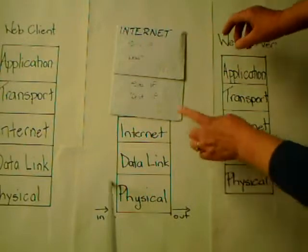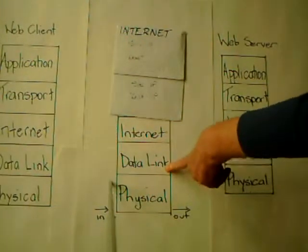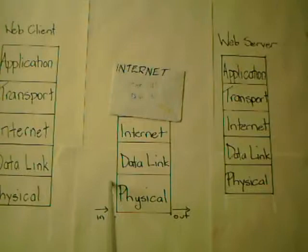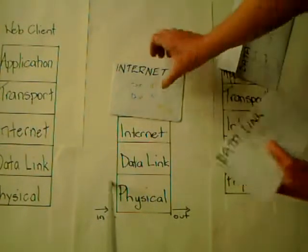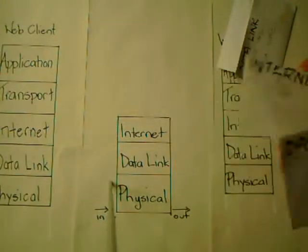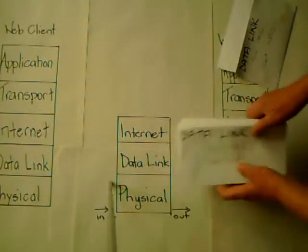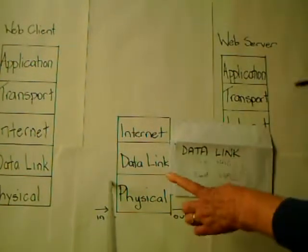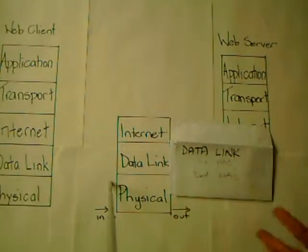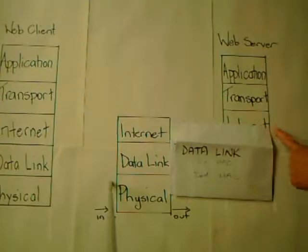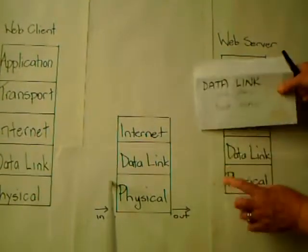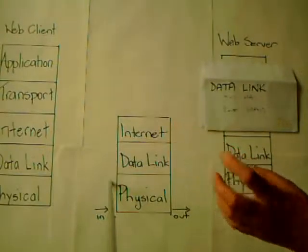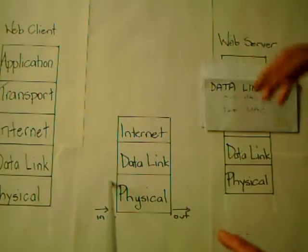The router sends the packets down through to the data link layer, where it encapsulates them into a new frame — putting a new frame around the packet. It puts the source and destination MAC address on it. This time, the source MAC address is the outgoing interface of the router, and the destination MAC address is the MAC address of the web server. The previous MAC addresses are no longer relevant.